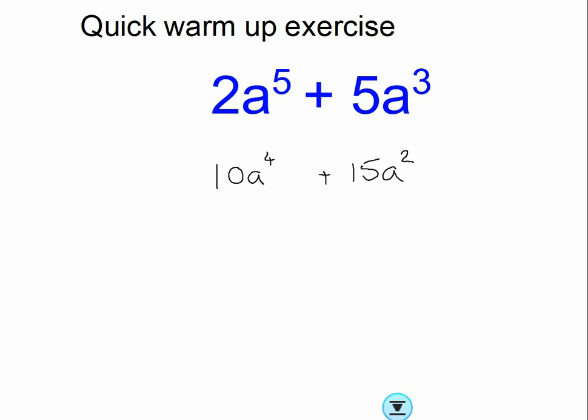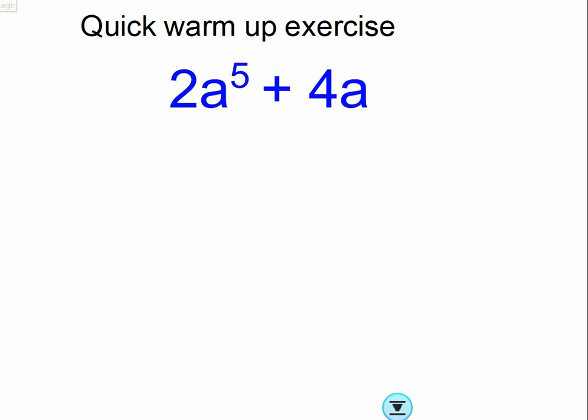So just because there's more than one term doesn't mean it's more difficult. That's exactly the same. Sorry I didn't change that, it's a bit lazy of me. So that's 10a to the power of 4, and okay, this is, remember this is a 1. 1 times 4 is 4, and we're going to drop that down to the power of 0. Anything to the power of 0 is 1, so we're just not going to write it. That's it done.